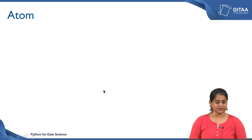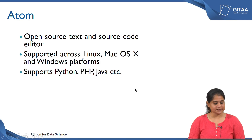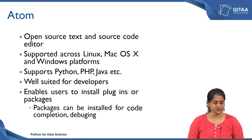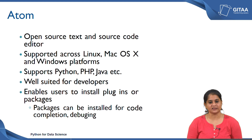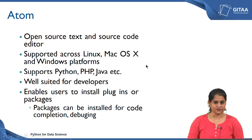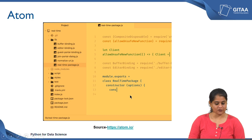Atom is an open source text and source code editor supported across all OS systems. It supports programming languages like Python, PHP, and Java and is very well suited for developers. It helps users install plugins or packages. One common drawback is that text and source code editors do not come installed with basic libraries of any programming language — you have to install packages as needed. However, Atom does provide packages for data science, code completion, navigation, and debugging. This is how Atom's interface looks — a proper text editor interface.